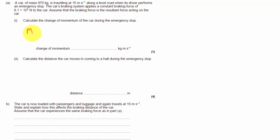Calculate the change in momentum of the car during the emergency stop. So, quite straightforward. It's going to be mass times the change in velocity. The mass is 970. The change in velocity was from 15 to 0, so it's actually minus 15 metres per second.